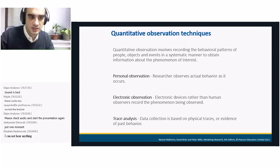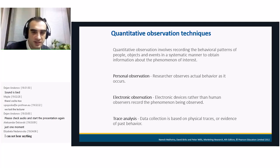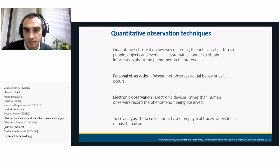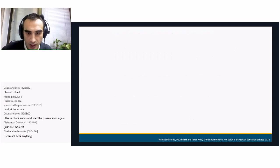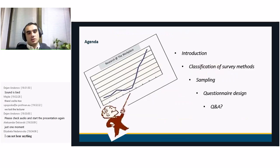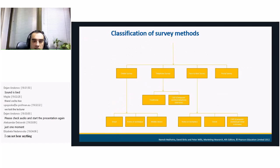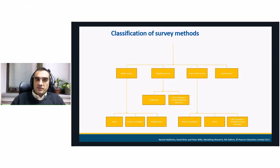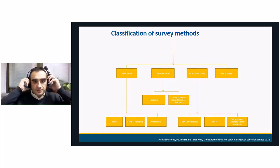Please apologize for this inconvenience — when technology is involved, sometimes you cannot do everything right. But we're here and we will repeat it again. So, as Violeta said, there are different types of methods that are used: online survey, telephone survey, face-to-face survey, and postal survey. Online survey can be conducted via email, at the home or workplace of the respondent, or via mobile device. Face-to-face survey can be conducted on the street, at home or workplace, or at other places.